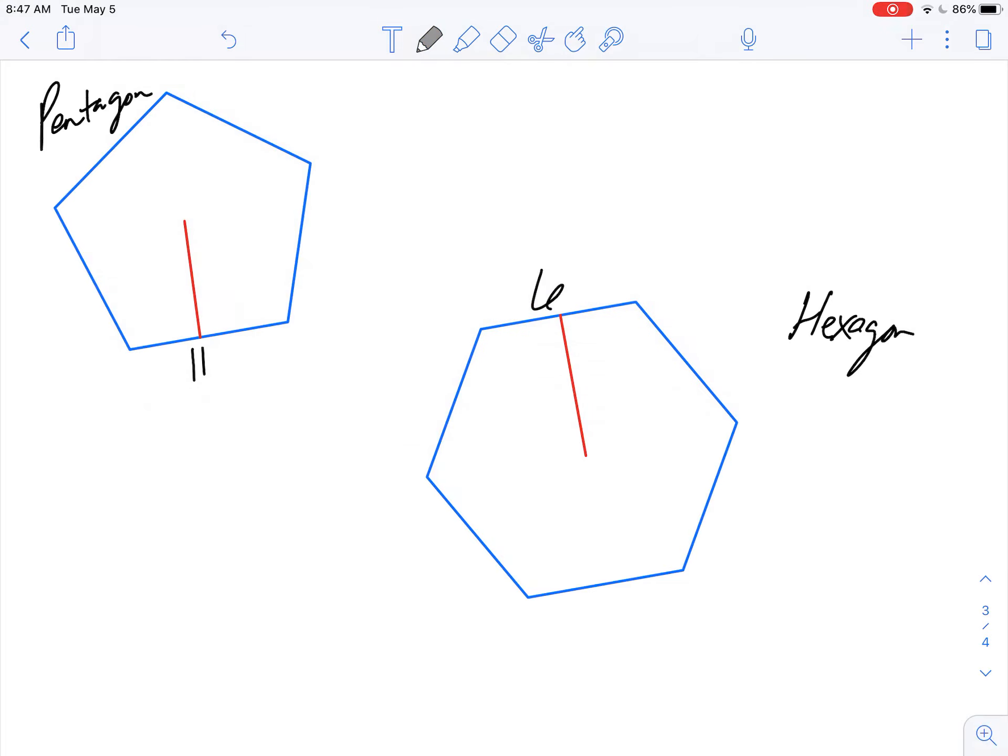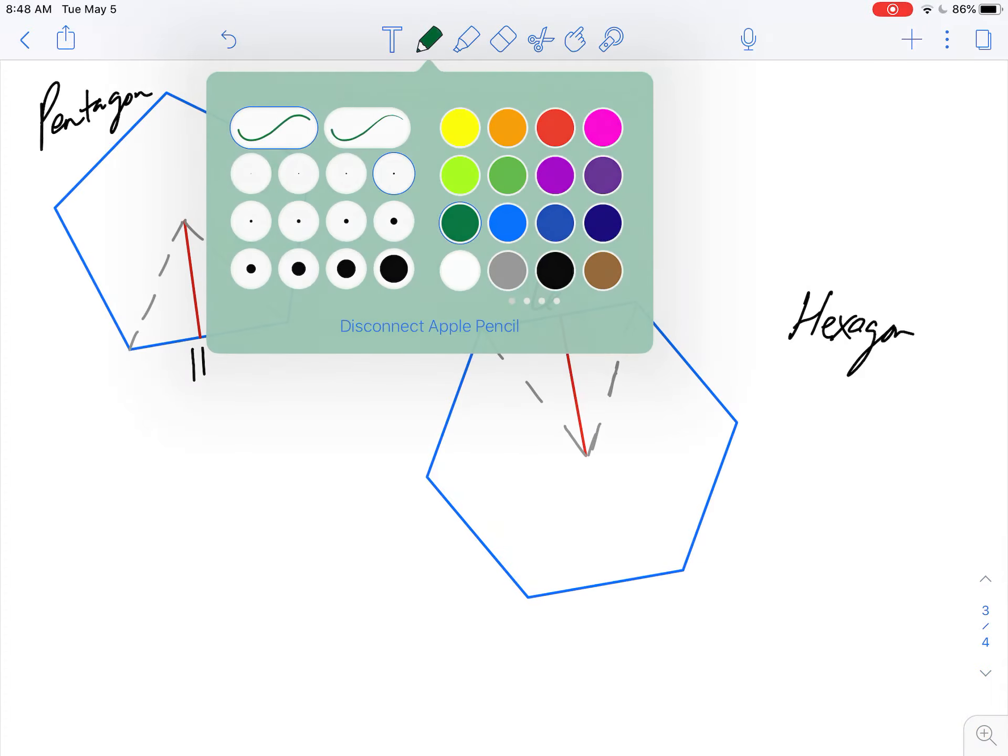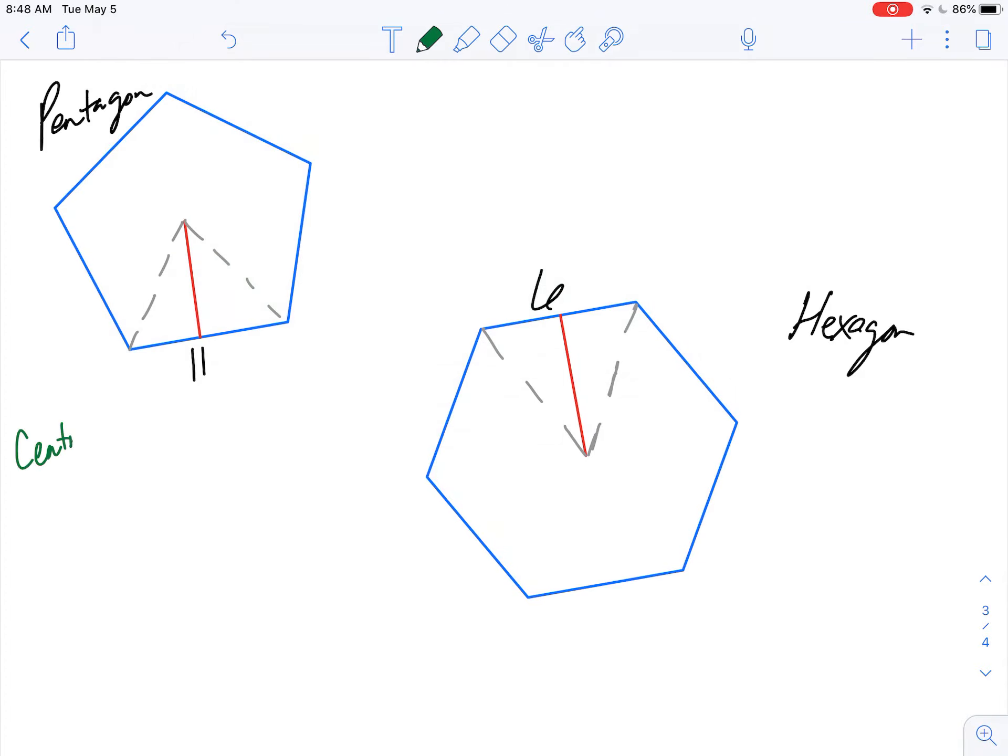Okay, so what we need to do is find that central angle again, outlined here in gray. The way we do that is take 360 divided by the number of sides. So central angle equals 360 over 5, which is 72 degrees.